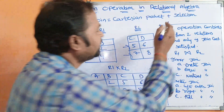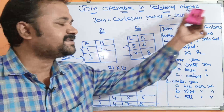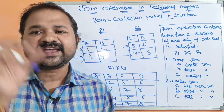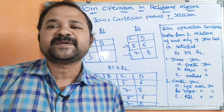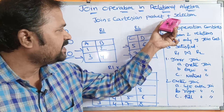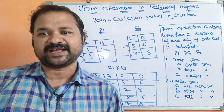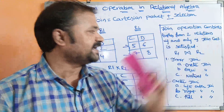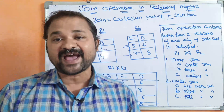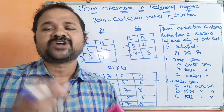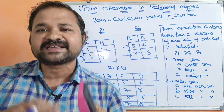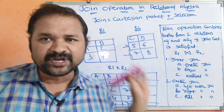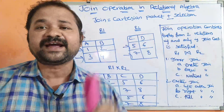We can say that join is a combination of cartesian product and select operation. After cartesian product, it produces a large number of tuples. Among all the tuples, we can select only a few tuples by specifying the join condition. So join means combination of cartesian product and selection operation. Join operation combines tuples from two relations if and only if the join condition is satisfied.